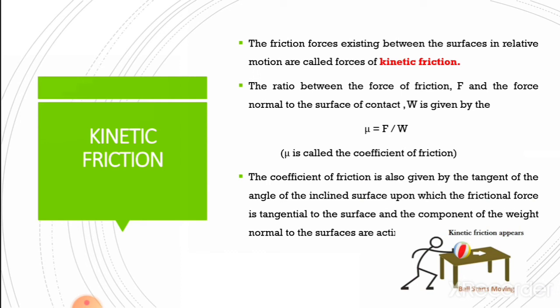mu equals F by W, where mu is called the coefficient of friction, F is the force of friction, and W is the weight of the body acting in a downward direction. The coefficient of friction is also given by the tangent of the angle of the inclined surface upon which the frictional force is tangential to the surface and the component of the weight normal to the surface are acting.